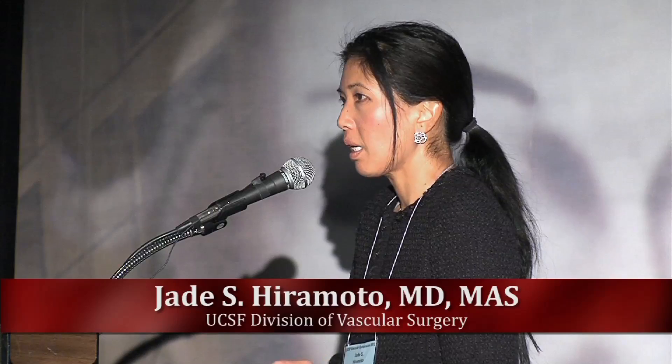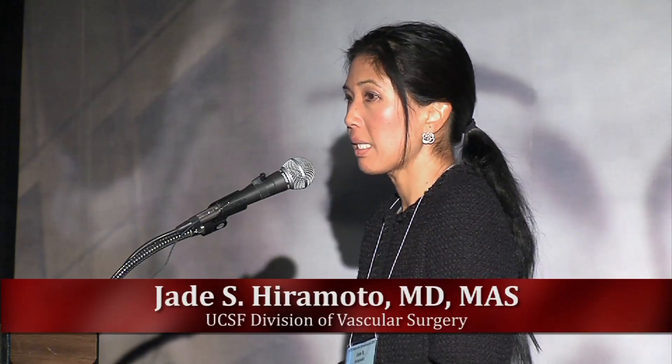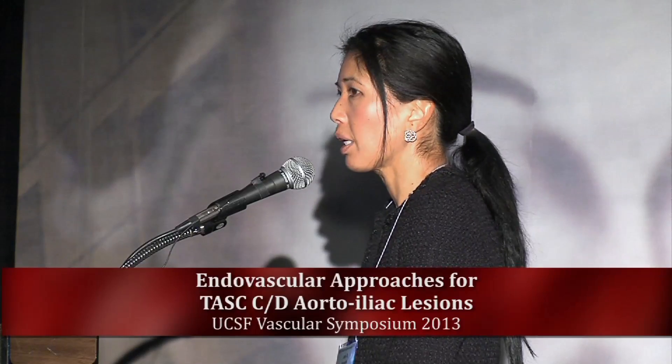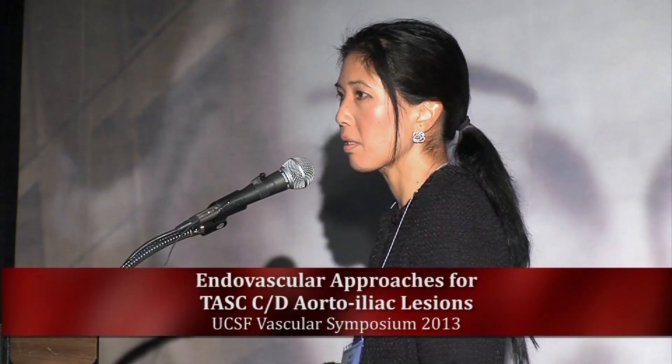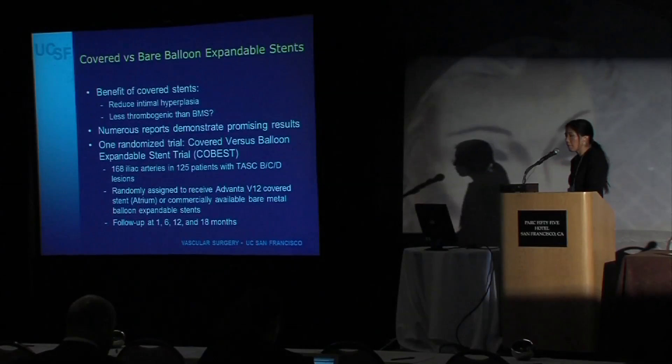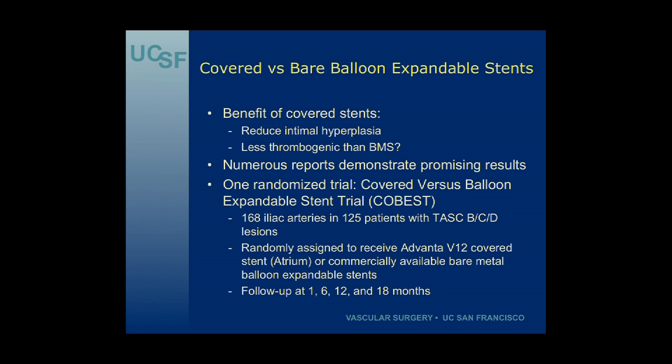All of these studies span quite a long period of time — starting back in the 90s through the mid-2000s — and used a variety of stents. In the last series, many TASC D lesions were treated with self-expanding stents, raising the question of whether covered stents would yield better patency results than bare-metal stents. The benefits of covered stents include reduction in intimal hyperplasia and potentially less thrombogenicity, with numerous small case series demonstrating promising results.